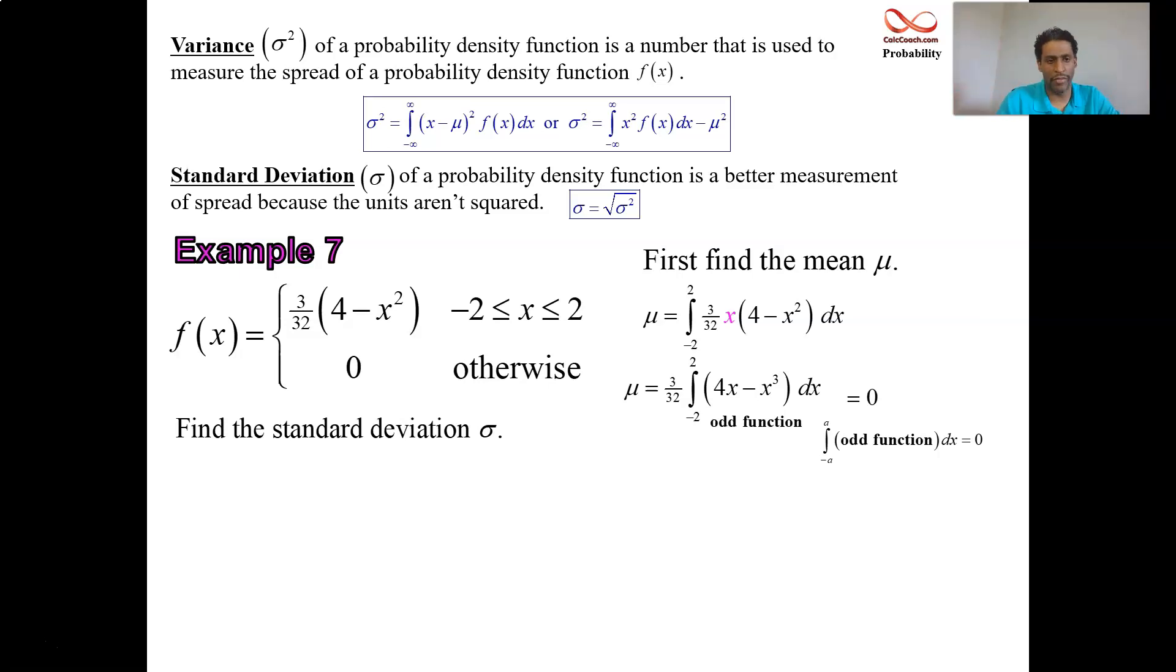Because of the symmetry of the PDF, that makes sense. When you have a symmetric PDF, both the mean and median will be exactly the same thing. Half your area should be to the left and half your area should be to the right if you're symmetric with respect to the y-axis.